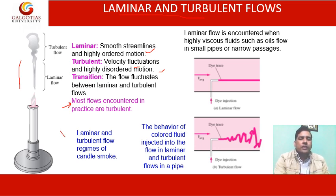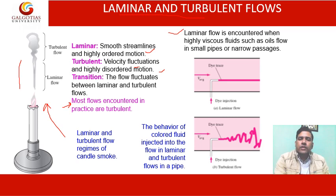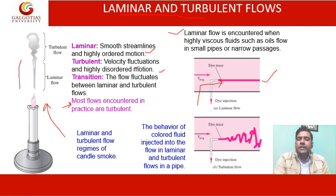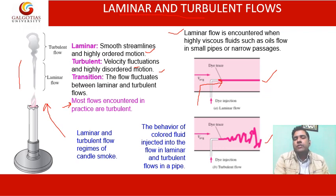Laminar and turbulent flow can be illustrated by the smoke from a burning candle. Another way to identify them is dye injection: if an orderly dye trace is obtained as the dye moves forward, it indicates laminar flow, and if the dye path becomes disordered, then it is turbulent flow.